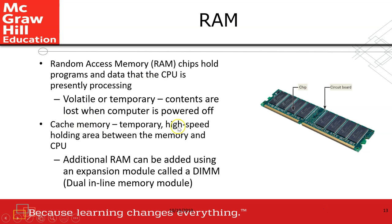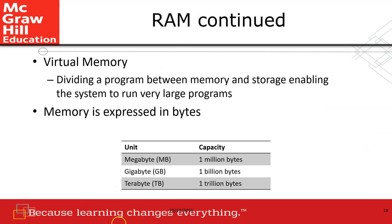Cache memory is a high-speed memory located in the CPU. Intel CPUs have cache memory embedded in them. Virtual memory is when your computer does not have enough RAM — it will take some space in the hard drive to support the computer. Memory is usually expressed in gigabytes — typically 4 GB, 8 GB, or 16 GB of RAM.